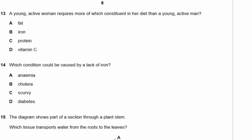Question 13: A young, active woman requires more of which constituent in her diet than a young, active man — fat, iron, protein, or vitamin C? A young, active woman needs more iron than a young, active man because a woman menstruates, losing a large amount of blood every month containing iron, which a man does not. The answer is B.